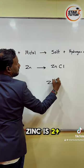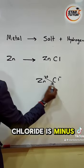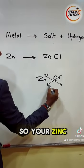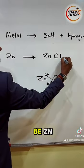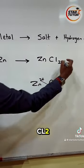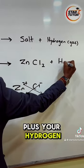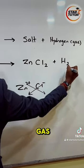Now zinc is 2 plus and chloride is minus, so your zinc chloride is going to be ZnCl₂, plus your hydrogen gas.